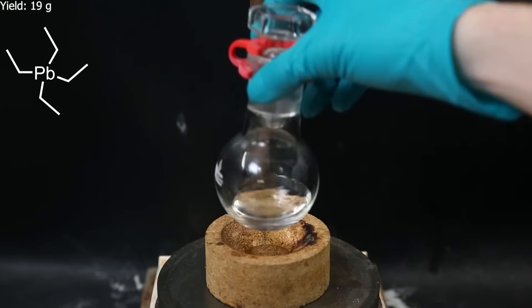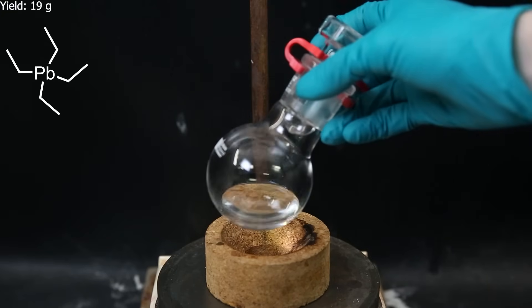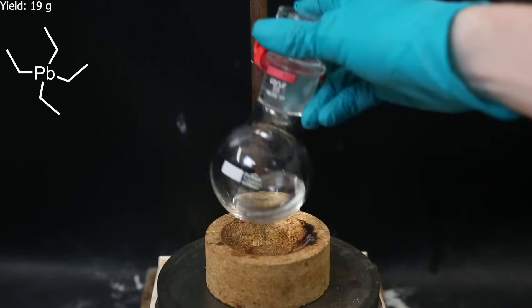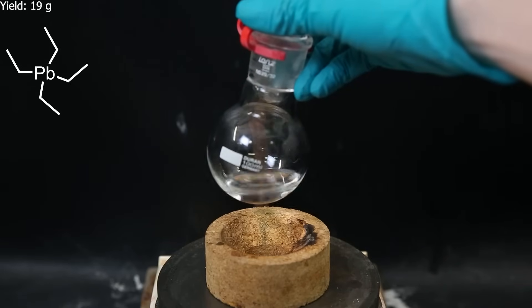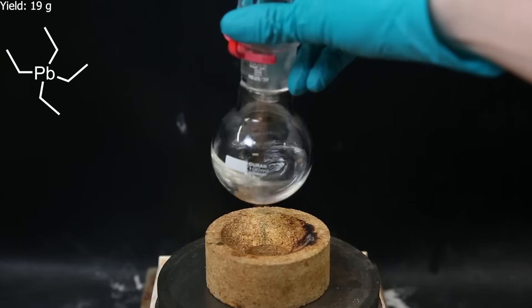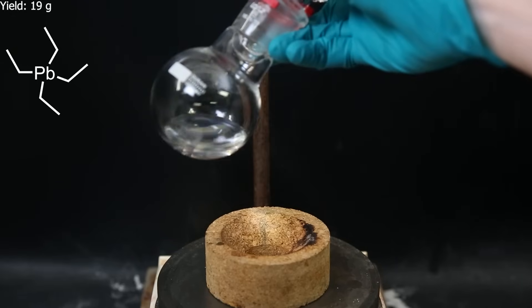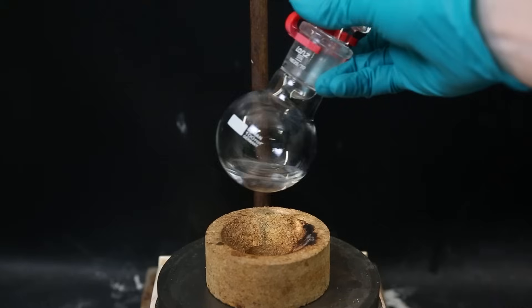When all of it has distilled over, I am left with 19 grams of tetraethyl lead. I can't calculate the percent yield properly since I don't know the exact contents of my alloy. But the yield for the final reaction is normally below 25%.